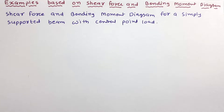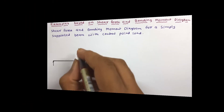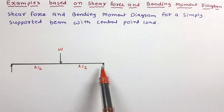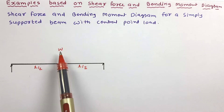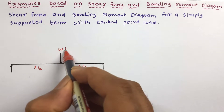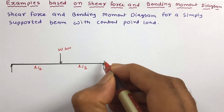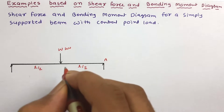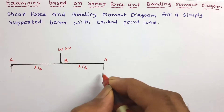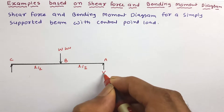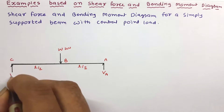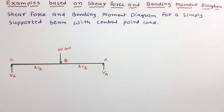Let us draw the figure first. The simply supported beam has a central point load of W kN. We label the important points as A, B, and C, with vertical reactions Va at A and Vc at C.